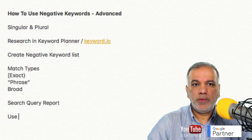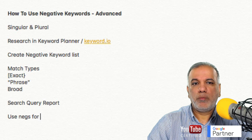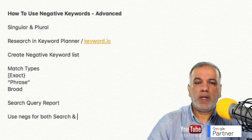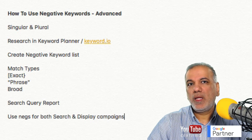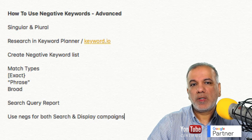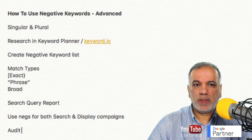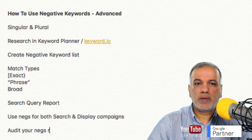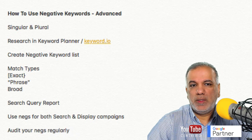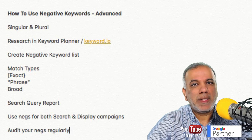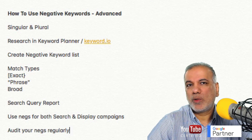The next step is to use negative keywords for both search and display campaigns. I don't see many people using negative keywords for display campaigns, but that will also help cut out wastage. And the last tip is to audit your negative keywords regularly — either the individual keywords or the list — just to make sure you haven't put anything in there which could potentially stop your impressions.